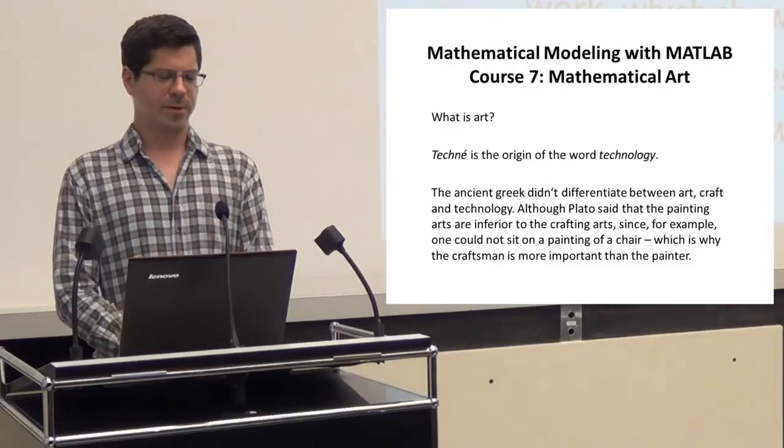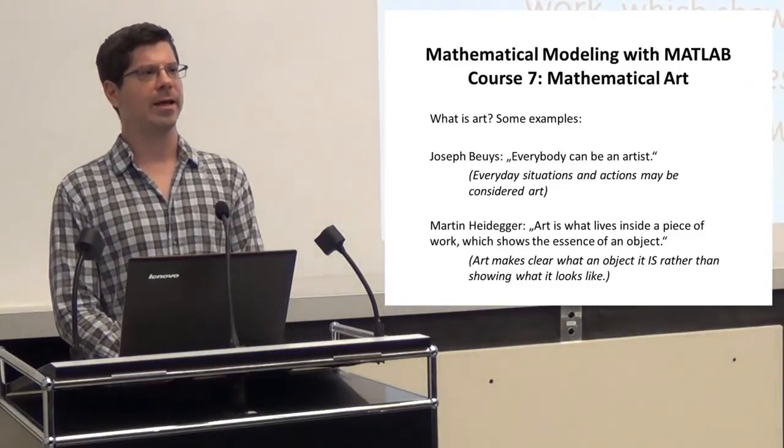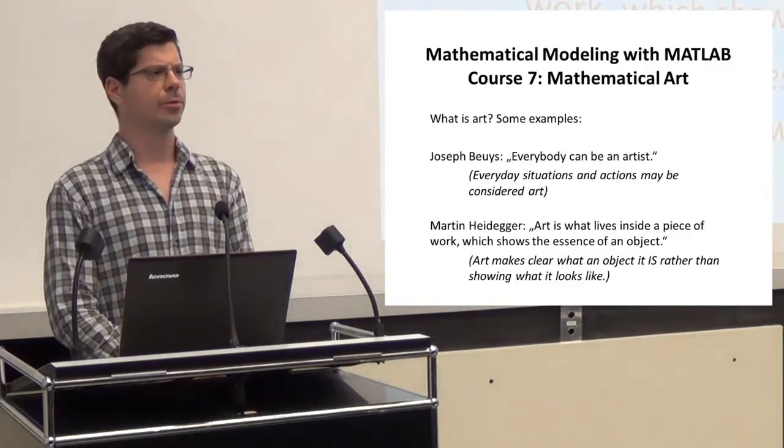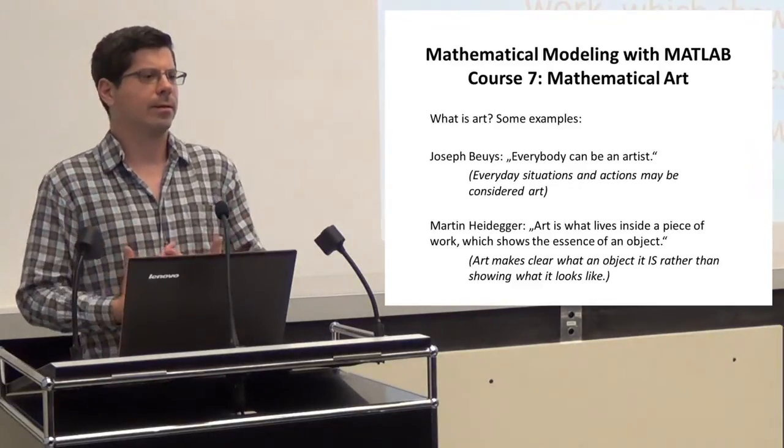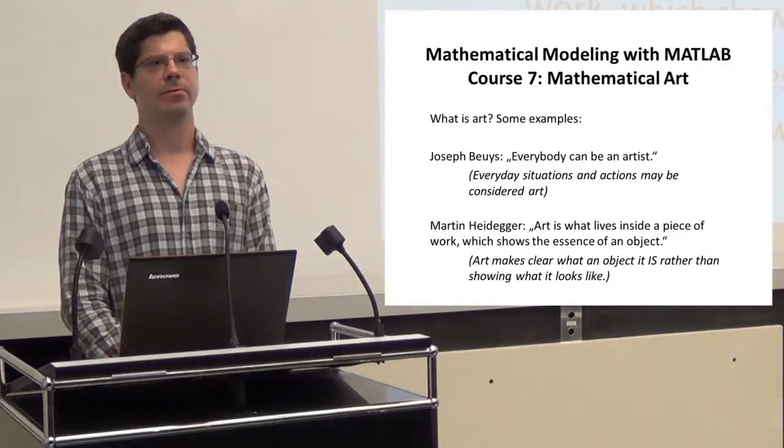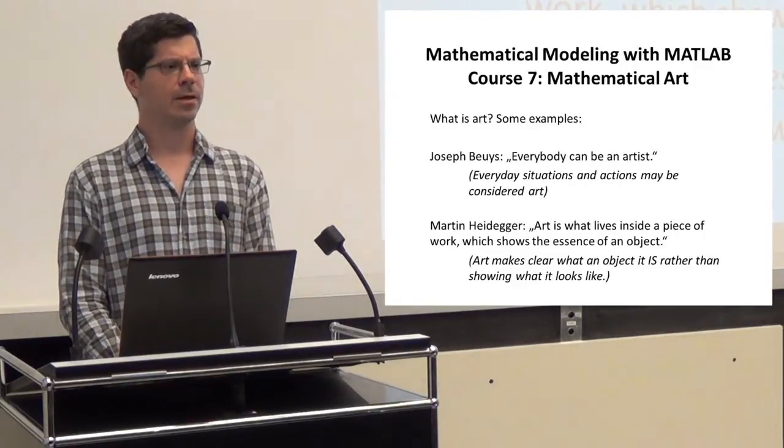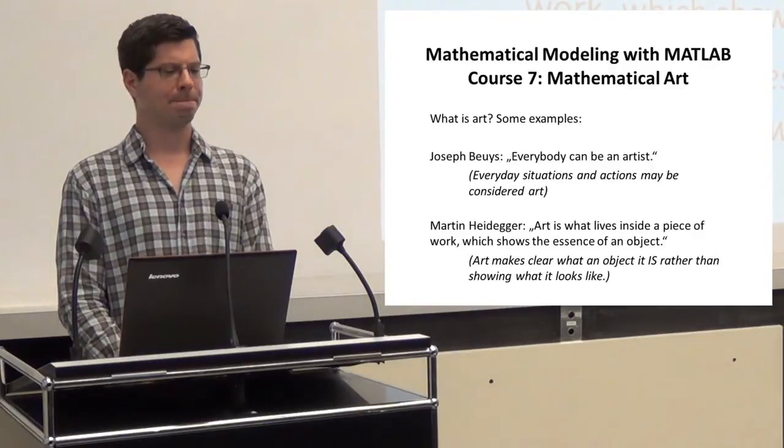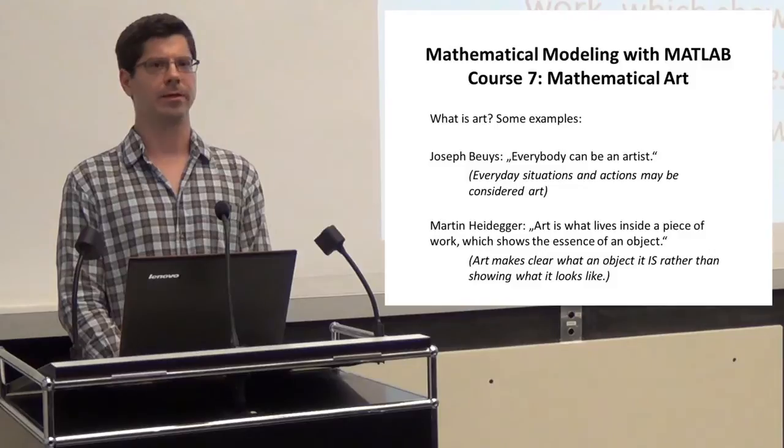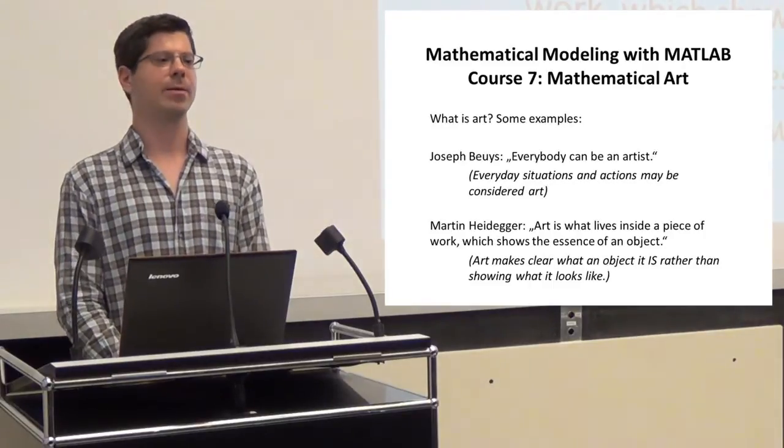Some examples. Joseph Beuys said everybody can be an artist, which does not mean that everybody is an artist. It means that everything and everyday actions, everyday things can be considered arts. And maybe you know that Marcel Duchamp, an artist, who did many very interesting things. And he had some urinals, the thing meant for peeing in toilets. And he signed them and put them on a pedestal. And this was his artwork, although he never called it art, as far as I know.